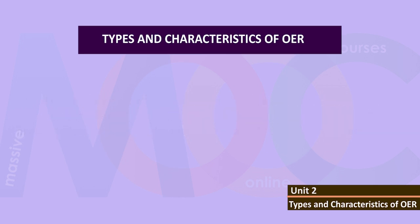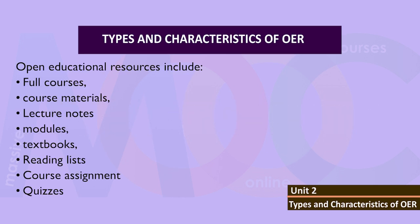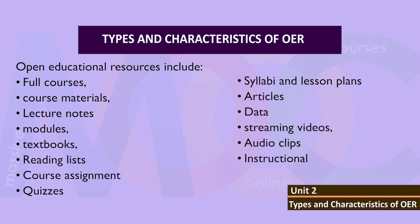Let us identify types of open educational resources. They include full courses, course materials, lecture notes, modules, textbooks, reading lists, course assignments, quizzes, syllabi and lesson plans.